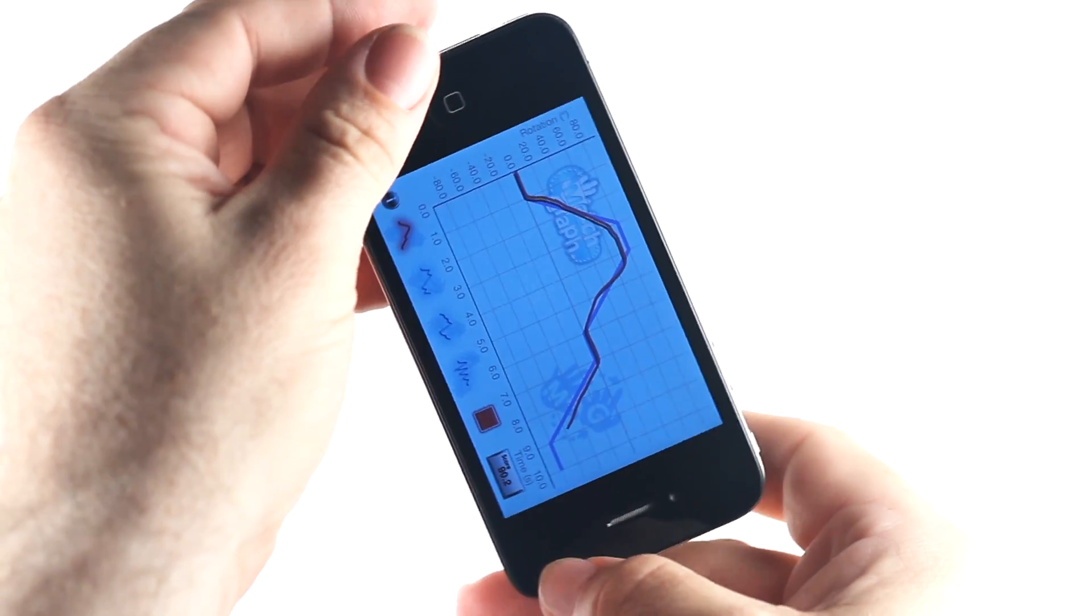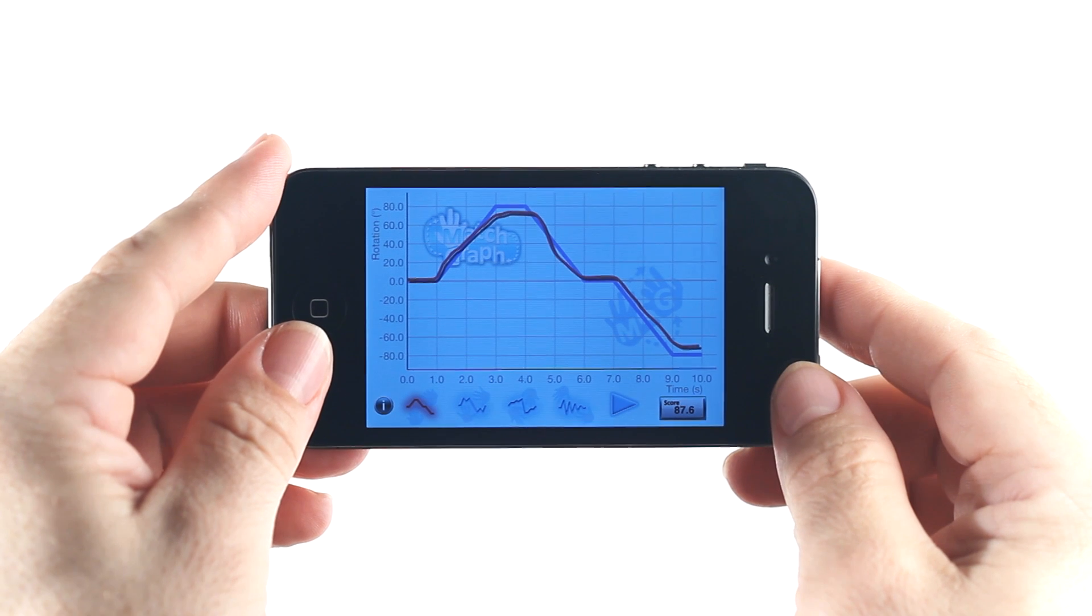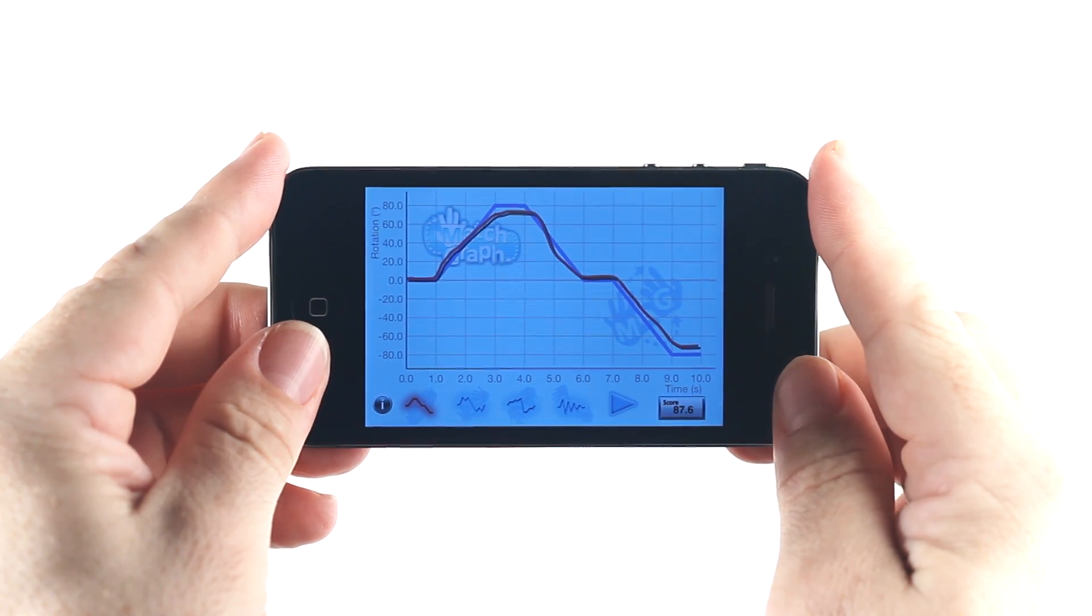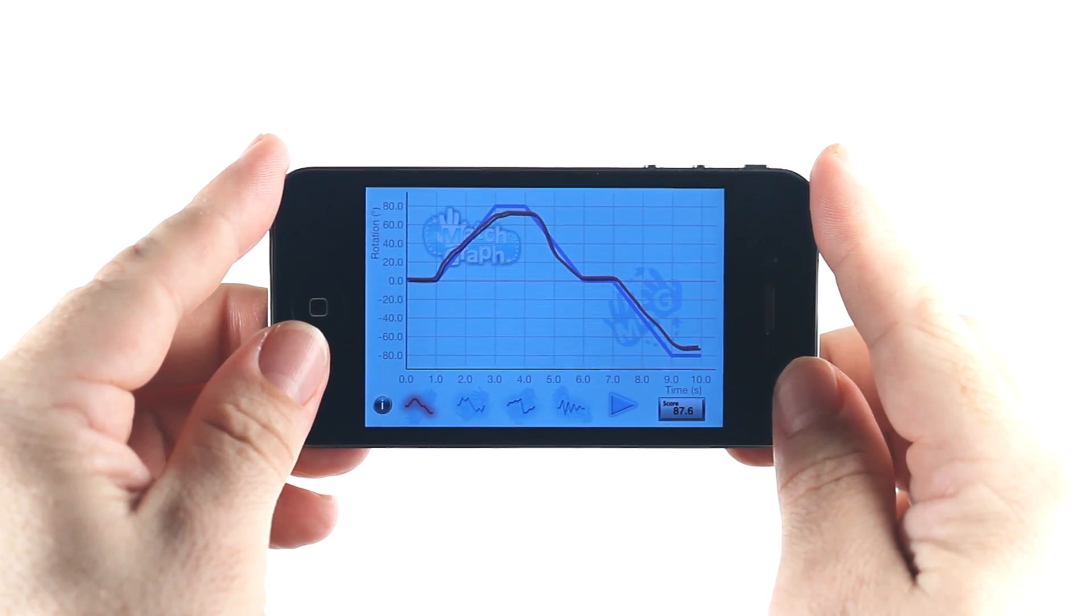The goal of Match Graph is to rotate your iPhone to match a target graph on the screen to maximize your score. The farther off your measured position is from the target line, the more points you lose.